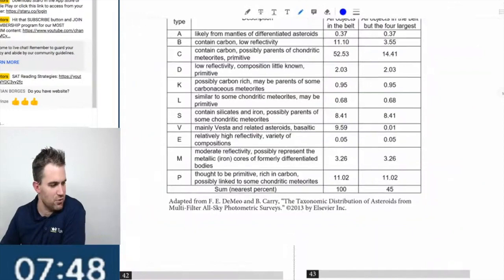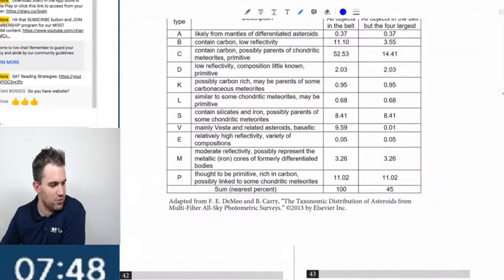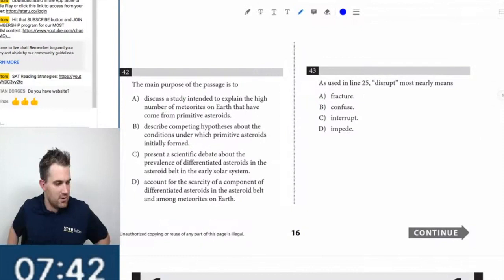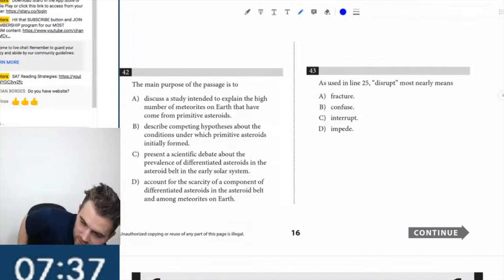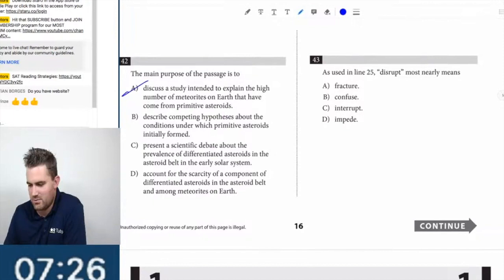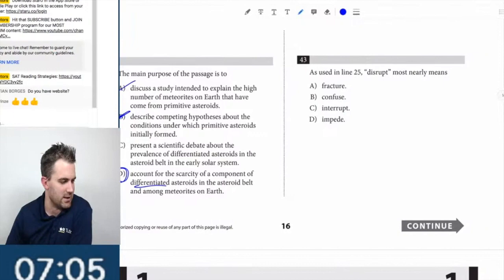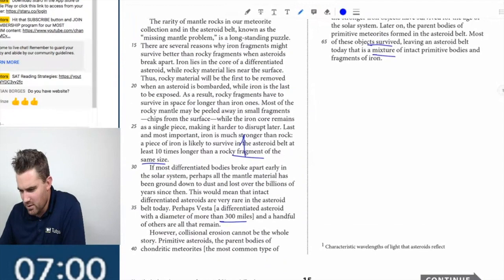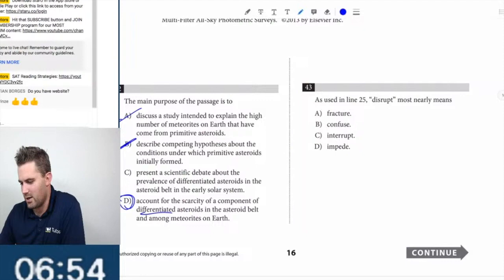Fragments of iron. If you took this test, how many of you guys were overwhelmed by that passage? The main purpose of the passage, right? Anybody feel like these were just ridiculous questions? I think it's D. It's definitely not A or B because it's talking about differentiated asteroids the whole time. As you use the 925, disrupt 25 harder to disrupt a single piece making it harder to break apart or disrupt. Fracture, probably right. When you break something you fracture it.